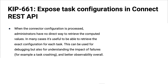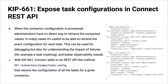Kafka Connect has one KIP: KIP-661, exposing task configurations in the Connect REST API. When you submit config to a connector via POST or PUT with a JSON document, some connectors do computation on that config before passing it to tasks — so the values tasks actually receive may differ from what you submitted. Now with this KIP, there's an API where you can explicitly get the configuration information that the task actually has, rather than what you last told the connector — a nice improvement for troubleshooting.